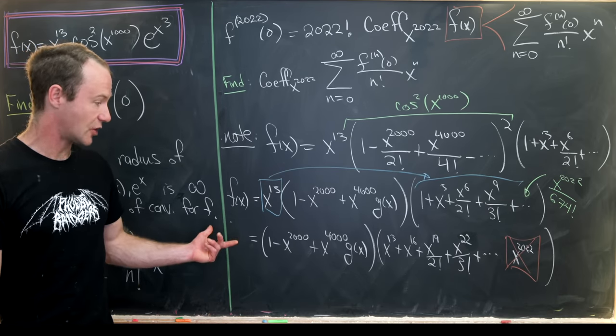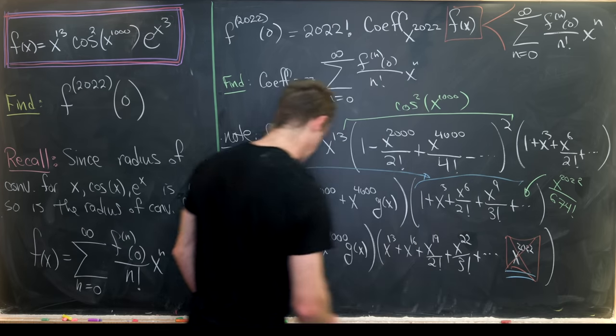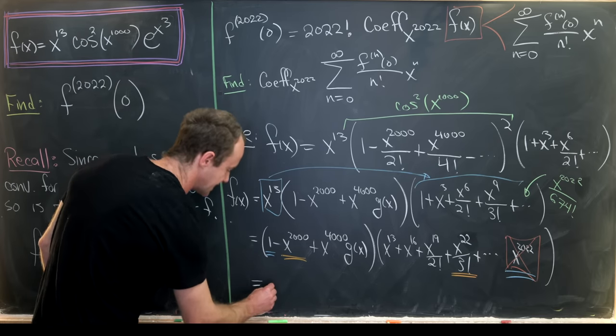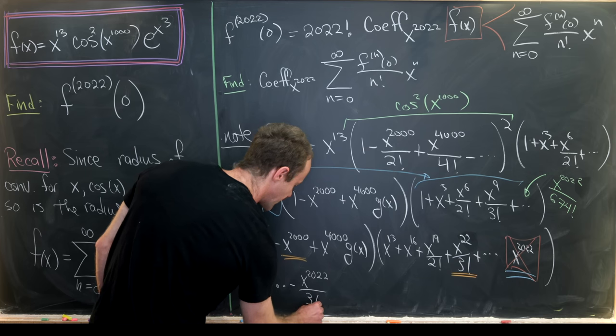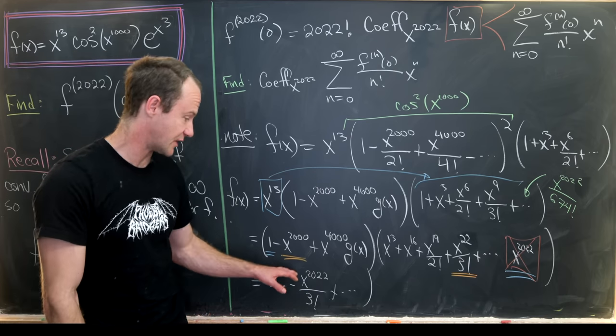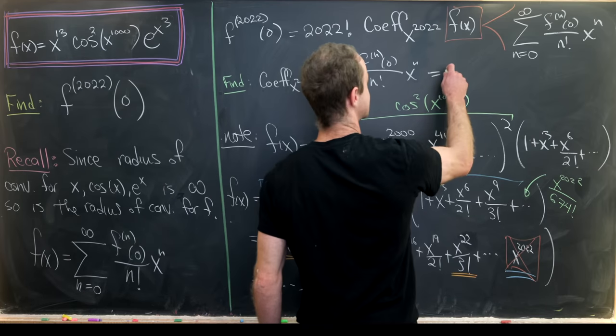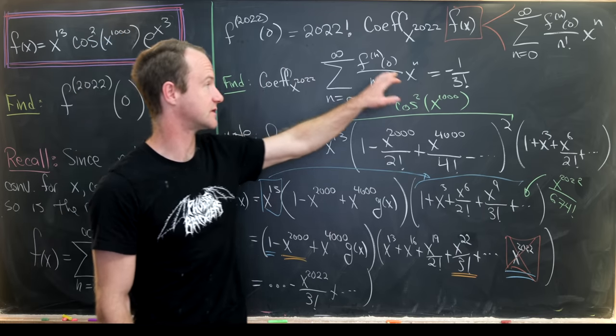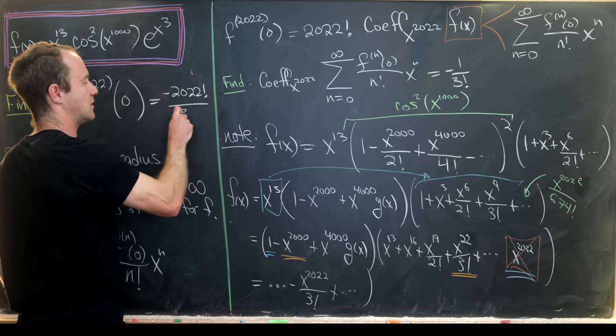So now let's see how to achieve x to the 2022. Well multiplying by 1 will not achieve x to the 2022 because it doesn't exist over here. Multiplying by x to the 2000 will because we've got an x to the 22 term. So this is going to give us some terms at the beginning and then we'll have minus x to the 2022 over 3 factorial and then plus dot dot dot. And nothing else will matter because everything else will have an exponent larger than x to the 22. So that means the coefficient of x to the 2022 from this expansion is exactly equal to minus 1 over 3 factorial. But that's not quite our final answer. Our final answer is 2022 factorial times this coefficient. And so in the end what we have is minus 2022 factorial over 3 factorial.